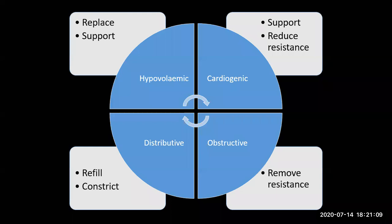In distributive shock — the septic shock patient with massive leaky vessels — we can push some fluid in. Anaphylactic shock is the classic example where we can give large volumes of fluid, and sepsis will also tolerate large volumes of fluid. Then we want to use a vasoconstrictor. Adrenaline is probably the most preferred agent in distributive shock patients — both spinal shock and septic shock.